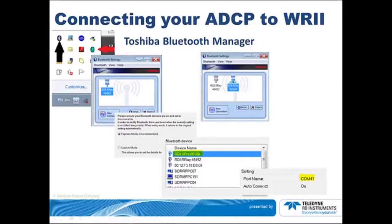Open the Toshiba Bluetooth manager. Be sure to click the icon shown by the red arrow, not the Windows manager shown by the black arrow. Click New Connection. The program will find all the Bluetooth devices in the neighborhood. When you see the StreamPro or the RiverRay appear, double-click on the icon. In a moment, right-click on the icon to enable the connection. Notice the green connected symbol just below the icon. You may have a BlueSoleil UD100, in which case you must use the BlueSoleil manager. The Microsoft manager, as well as the Toshiba and BlueSoleil, are covered in detail in the latest Wind River 2 user's guide.